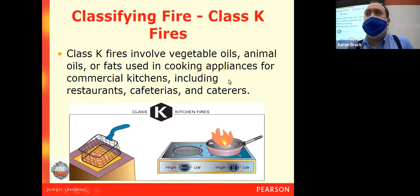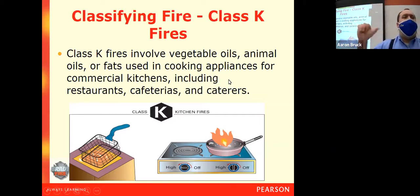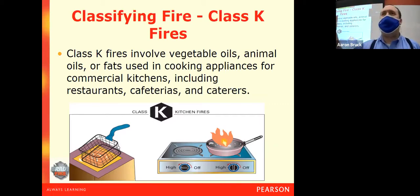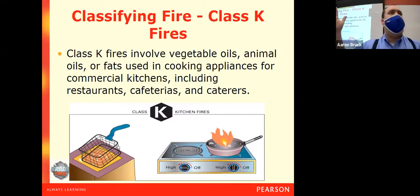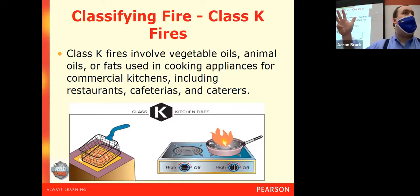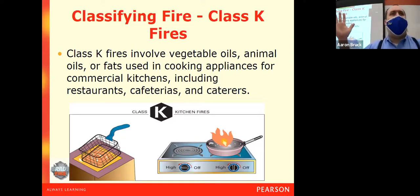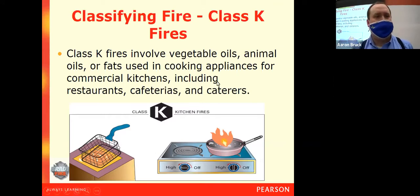So those are our five classes of fires. Again: A — common household goods; B — flammable liquids and gases; C — electrical; D — metal; K — kitchen oils and fats.